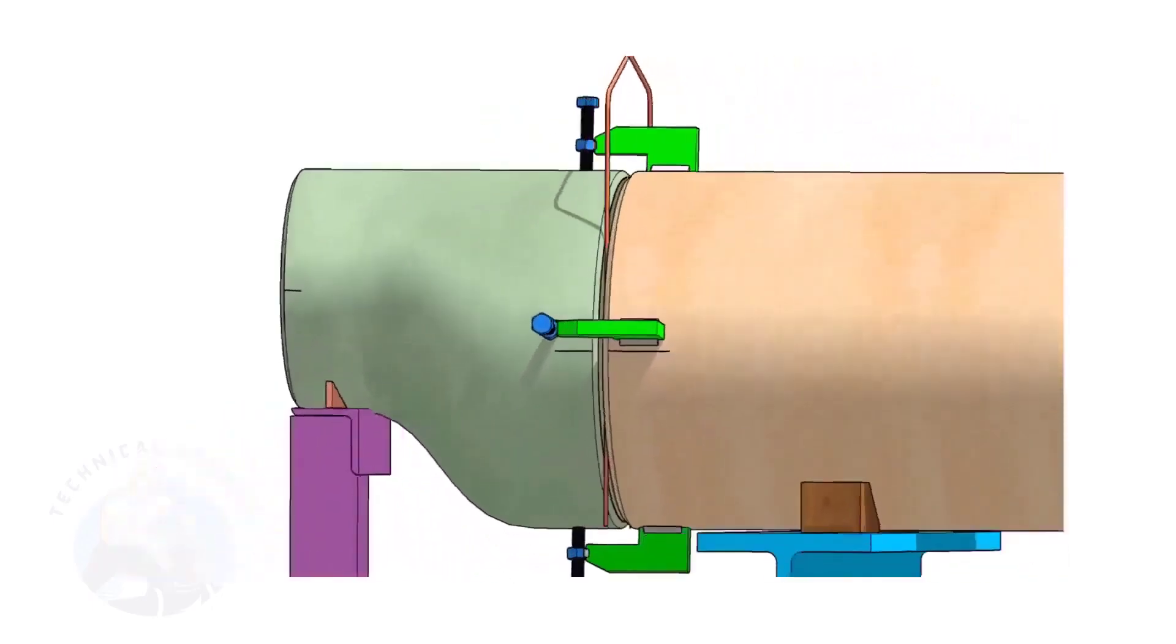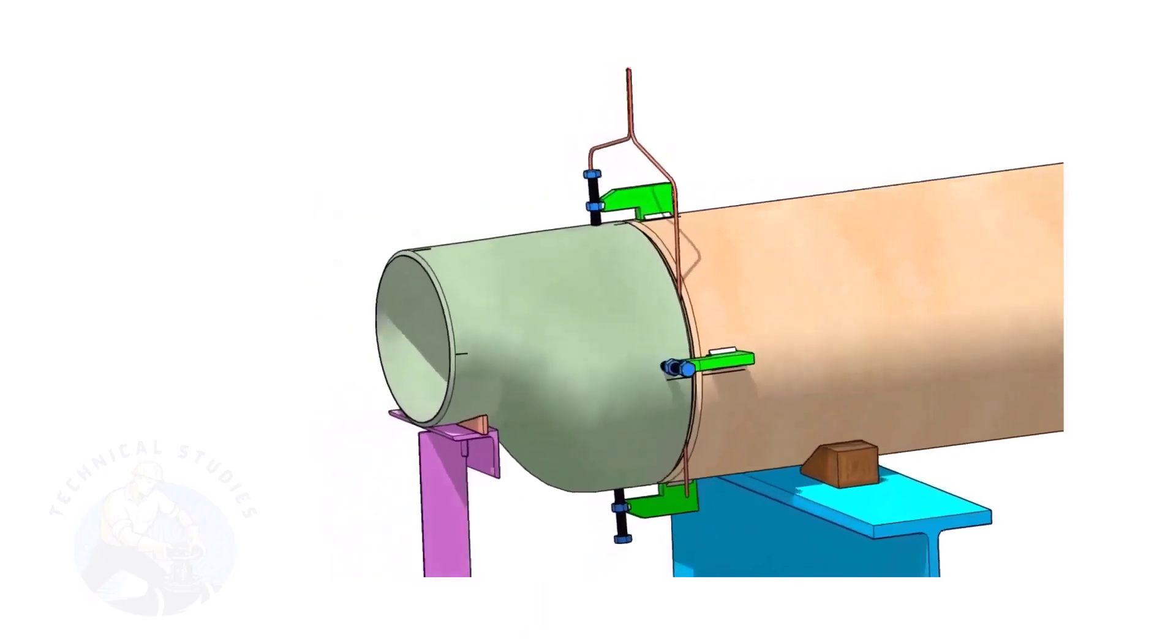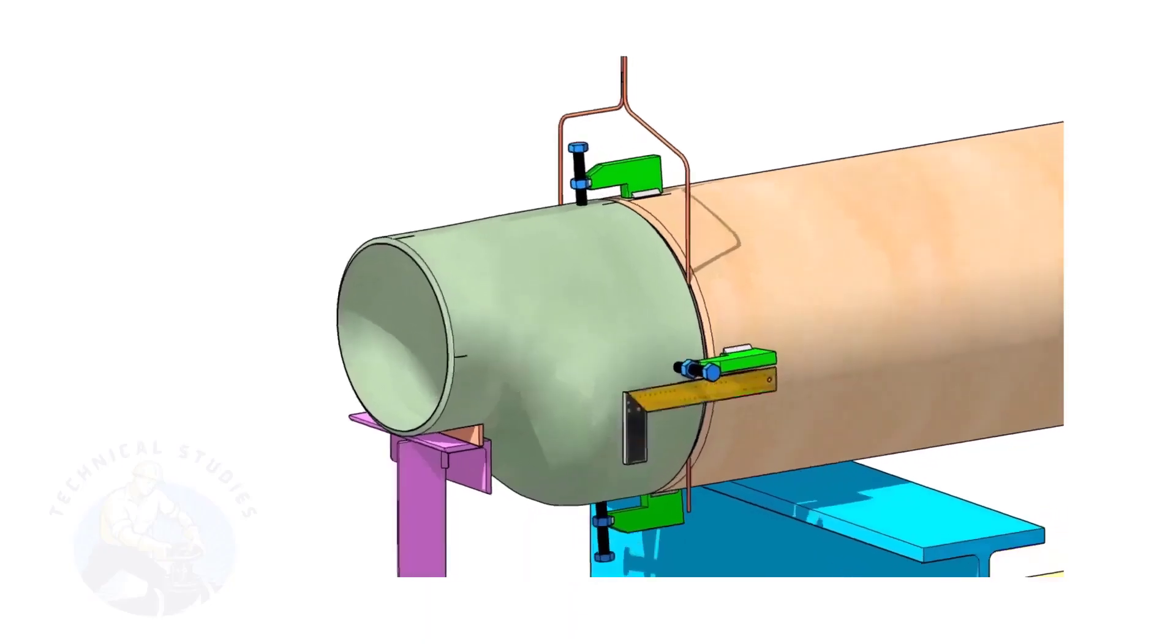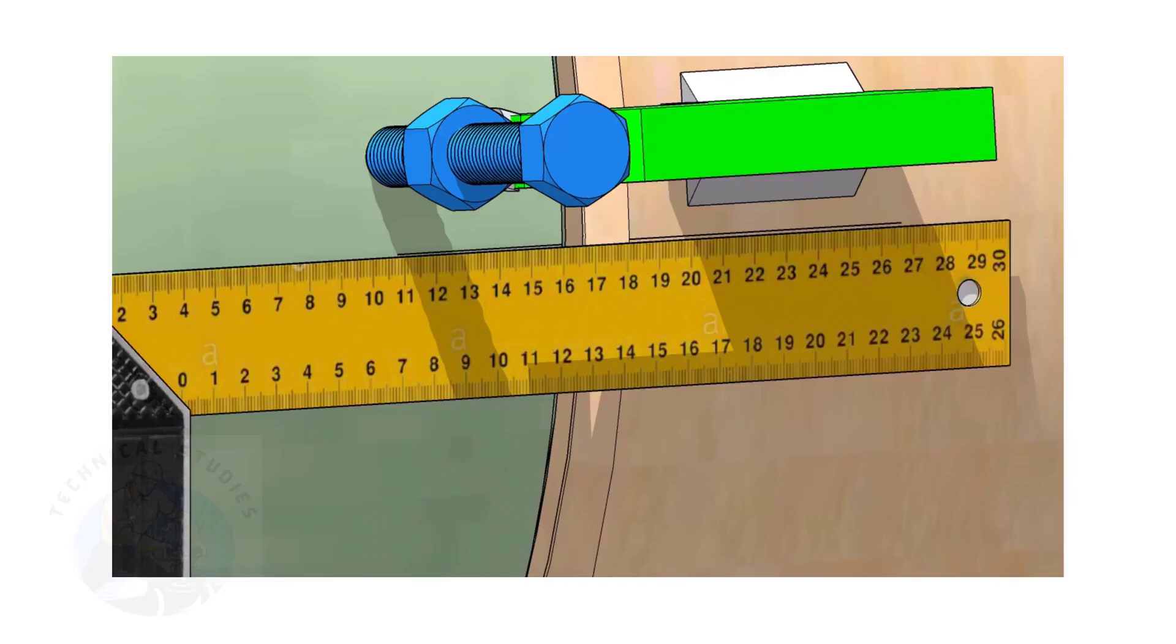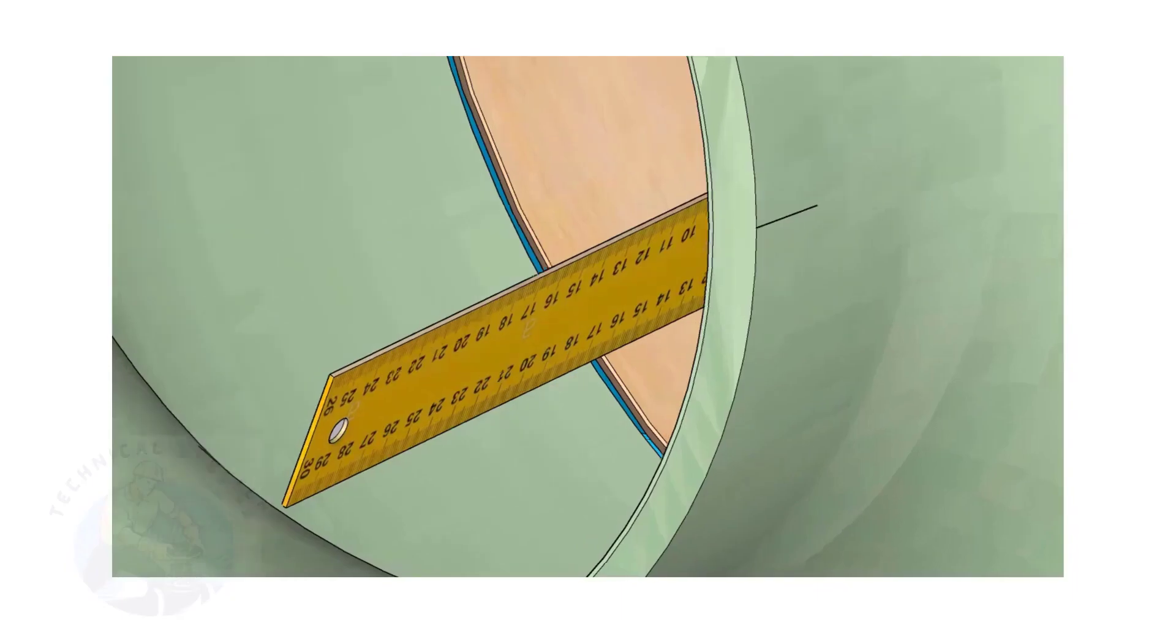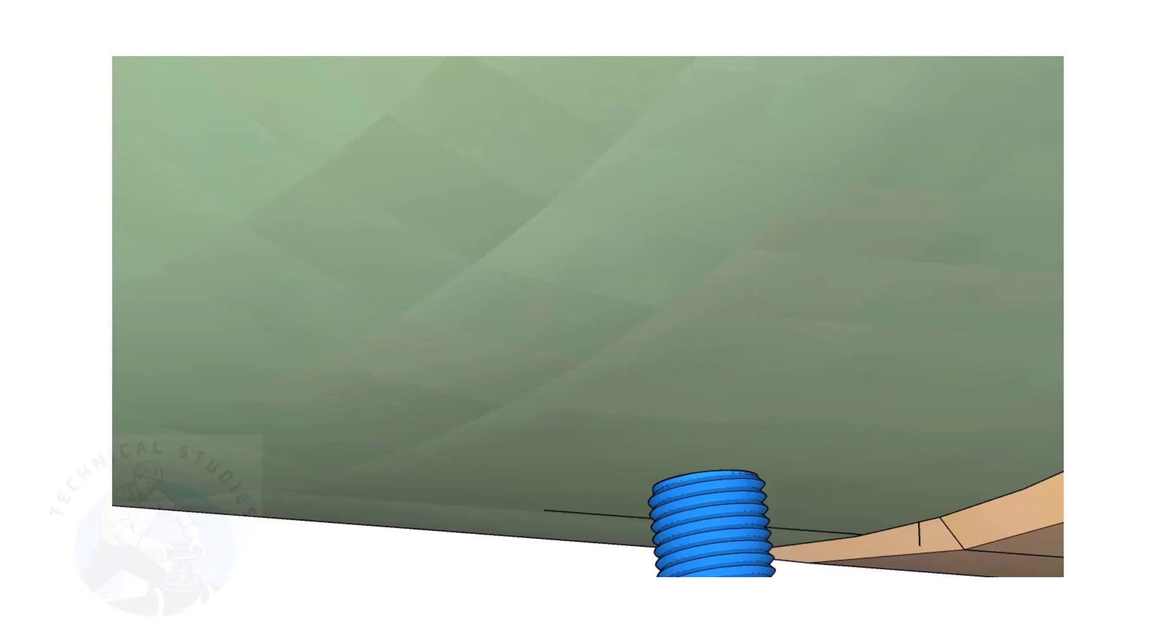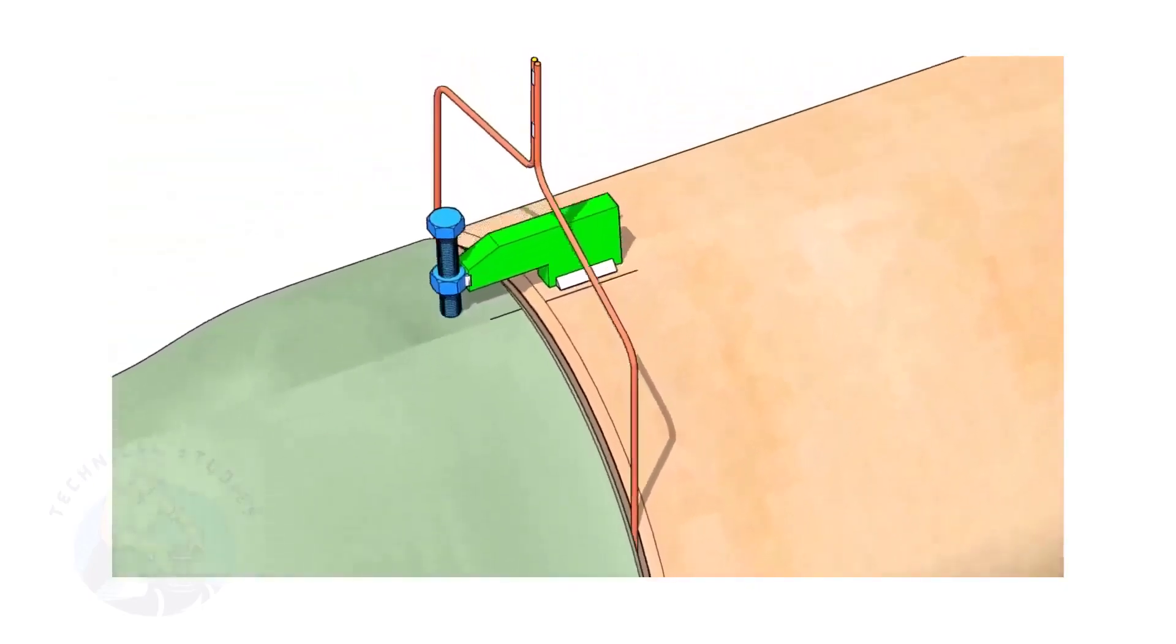Match the center lines on the pipe and on the reducer. By adjusting the jack bolts, correct the overlap of the joint inside the pipe. Now, tack weld on the top side of the joint.